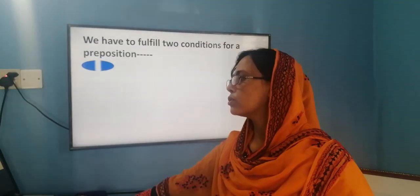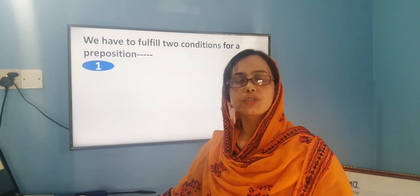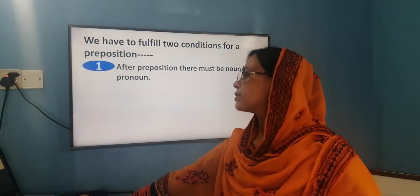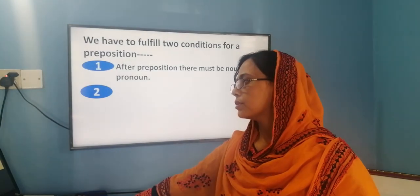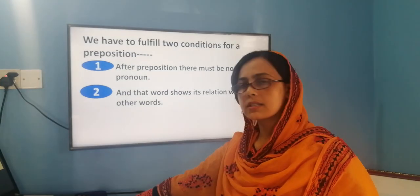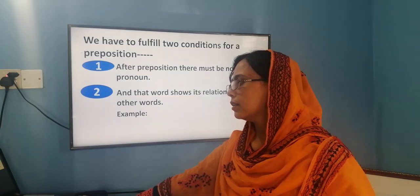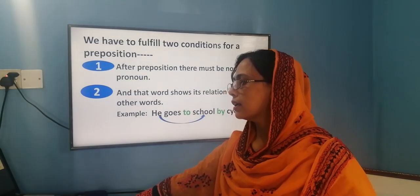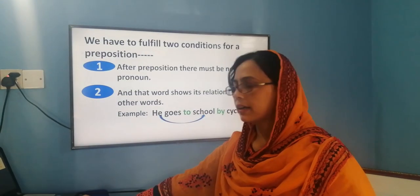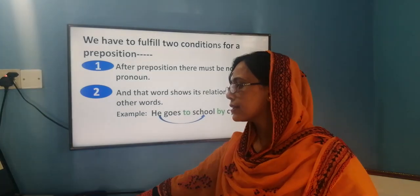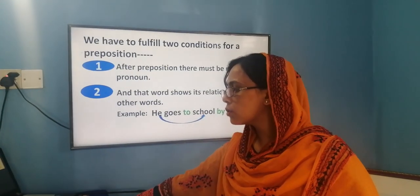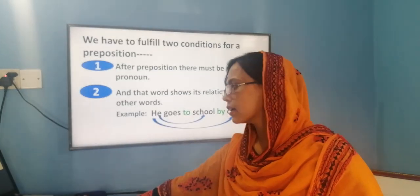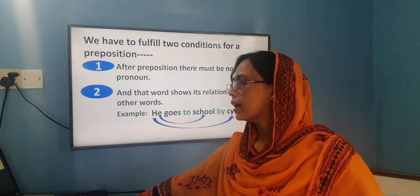We have to fulfill two conditions for a preposition. Number one: after using a preposition, there must be a noun or pronoun. Number two: that word shows its relation with other words in the sentence. For example, 'he goes to school by cycle.' Here, 'to' is a preposition linking 'school' and 'he.' And 'by' is another preposition showing the relation between 'cycle' and 'he.'